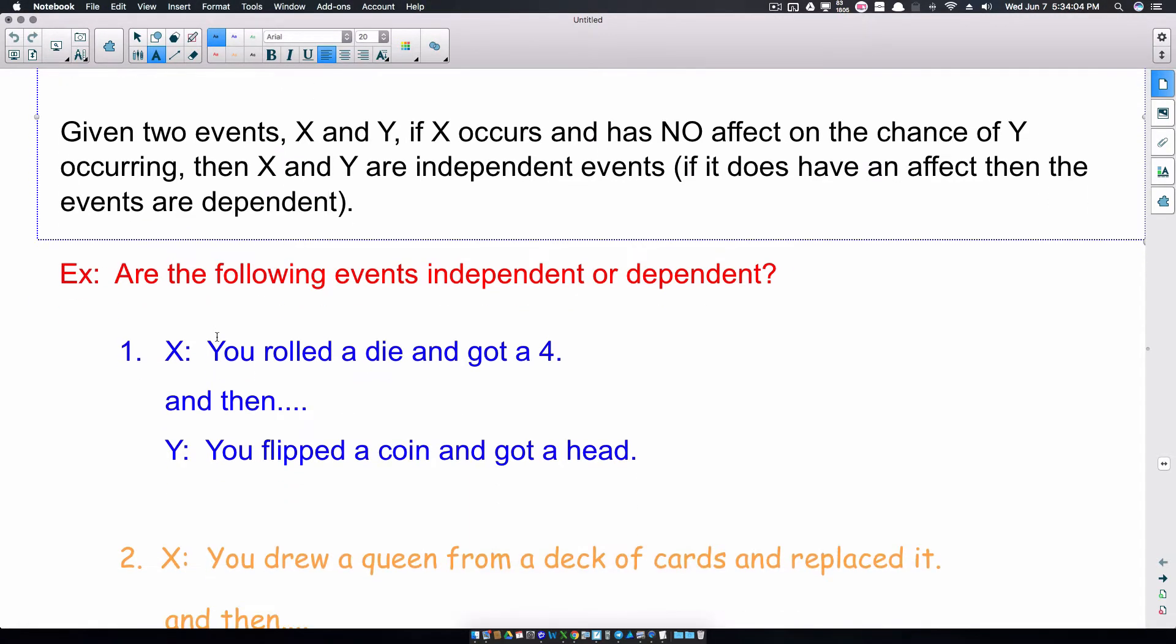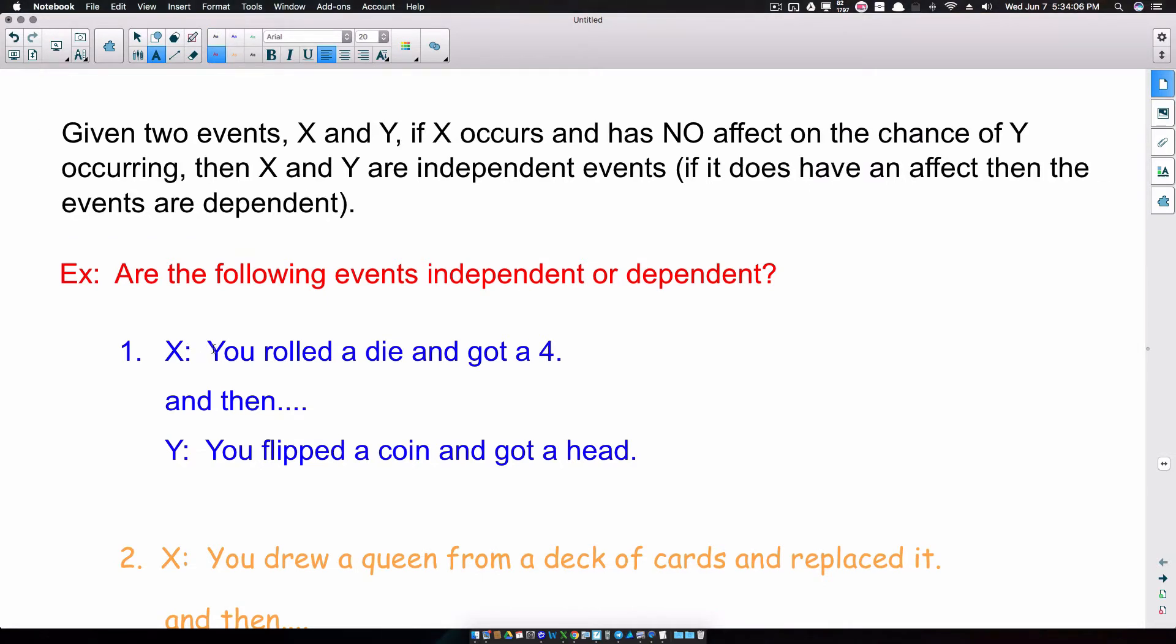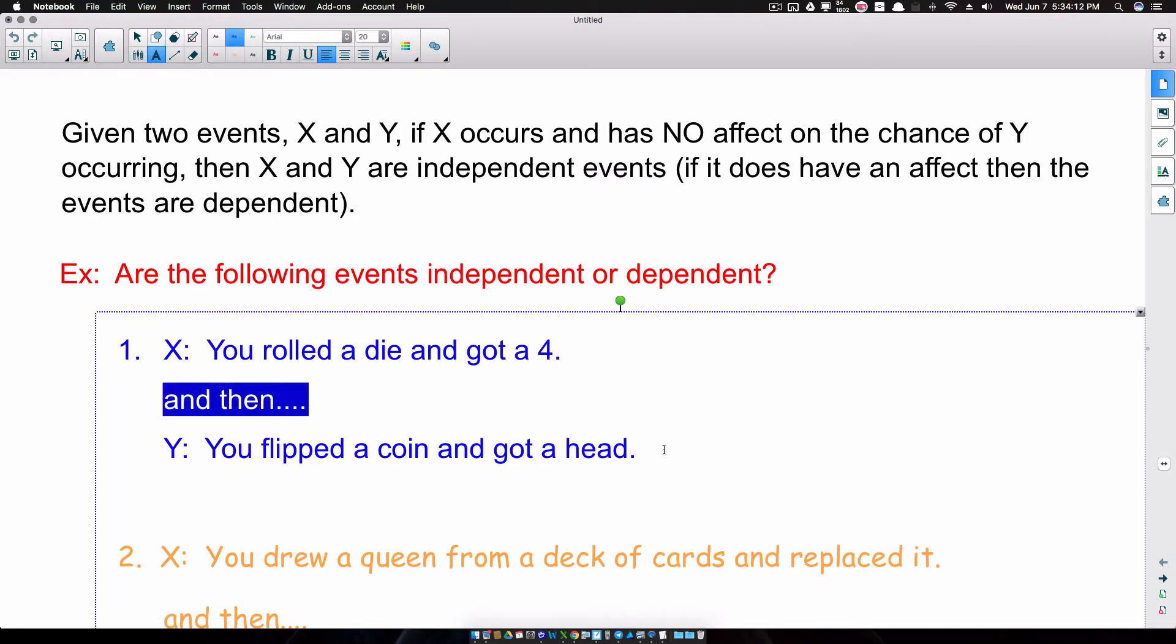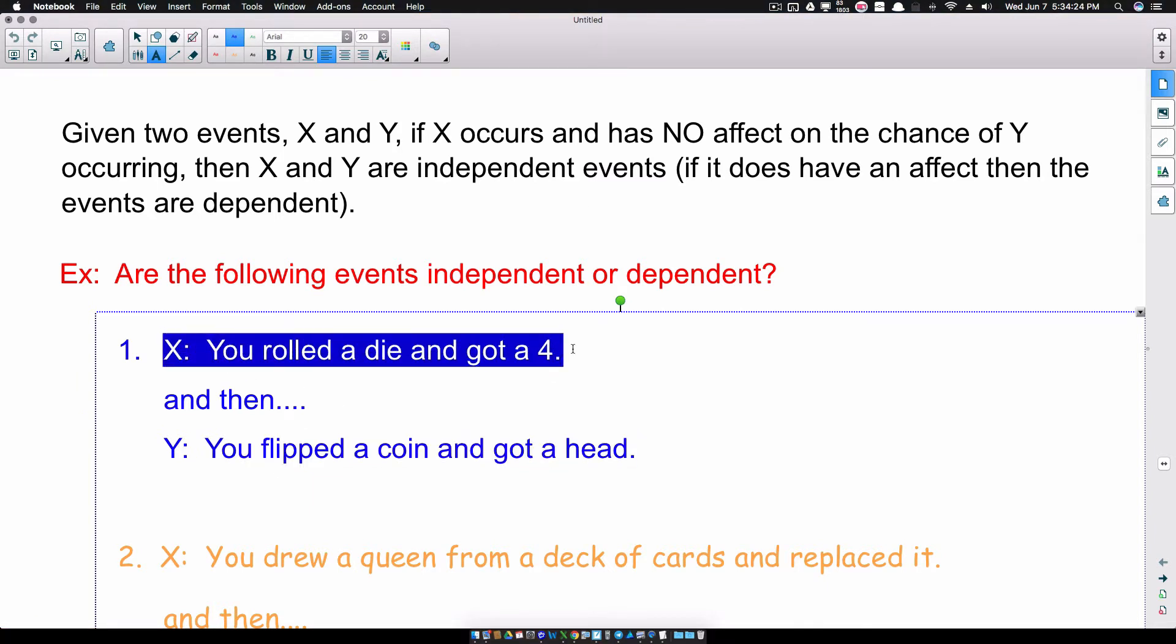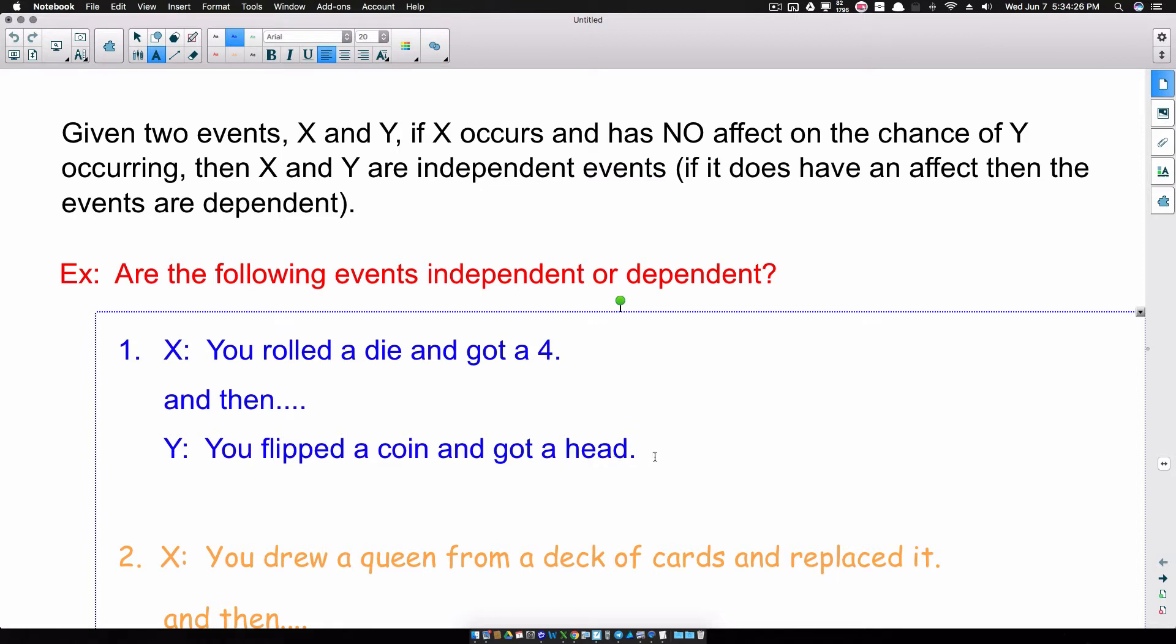So we got event X. You roll a dice and you get a 4. Okay, and then event Y: you flip a coin and you get a head. Well, let's talk about event Y. Does the probability or the chance of this occurring, is it affected in any way by what happens here? Well, let's talk about it. Suppose you flip a coin. If you flip a coin, the probability of getting a head is a half, right?